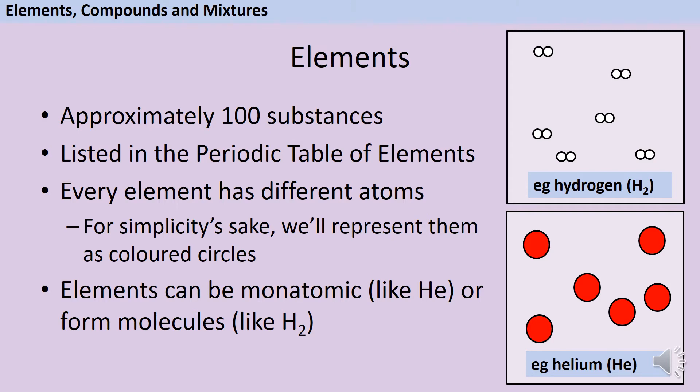Now one thing that's important to bear in mind is that an element is defined just by saying that all of its atoms are the same. It doesn't matter how many of them there are or how they're arranged. So for instance, in the bottom right picture, we've got what we call a monatomic substance. Helium is a nice example of this. Helium doesn't form bonds at all, so it just goes around as single atoms and that's an element.